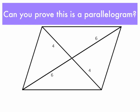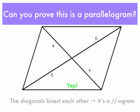This one is a little bit deceiving. Because the diagonals of this figure are cut into two equal parts, we know the diagonals bisect each other. And so, therefore, this is indeed a parallelogram.